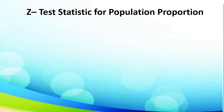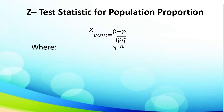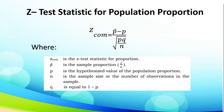Now, let us discuss the z-test statistic for population proportion. Using the given formula, Z-sub-com is equal to P-hat minus P, all over the square root of PQ over N. Where Z-com is the z-test statistic for proportion, P-hat is the sample proportion, P is the hypothesized value of the population proportion, N is the sample size or the number of observations in the sample, and Q is equal to 1 minus P.